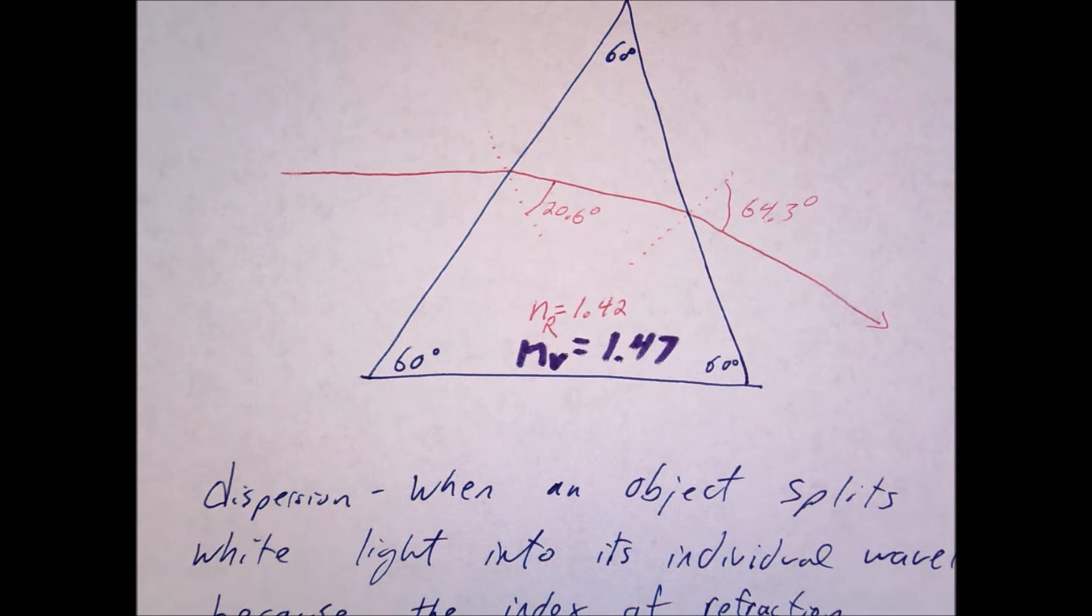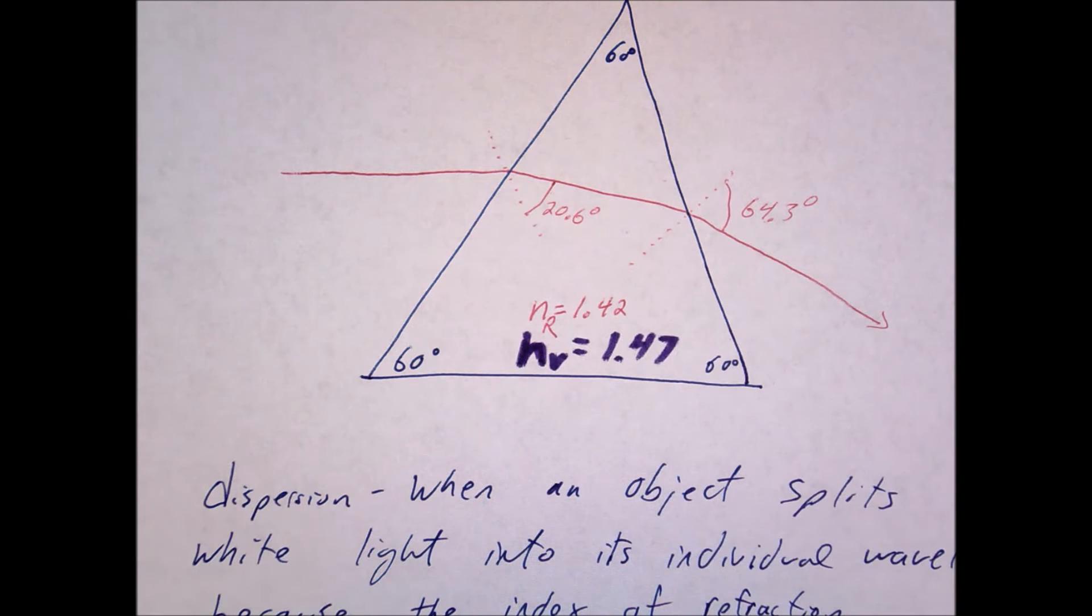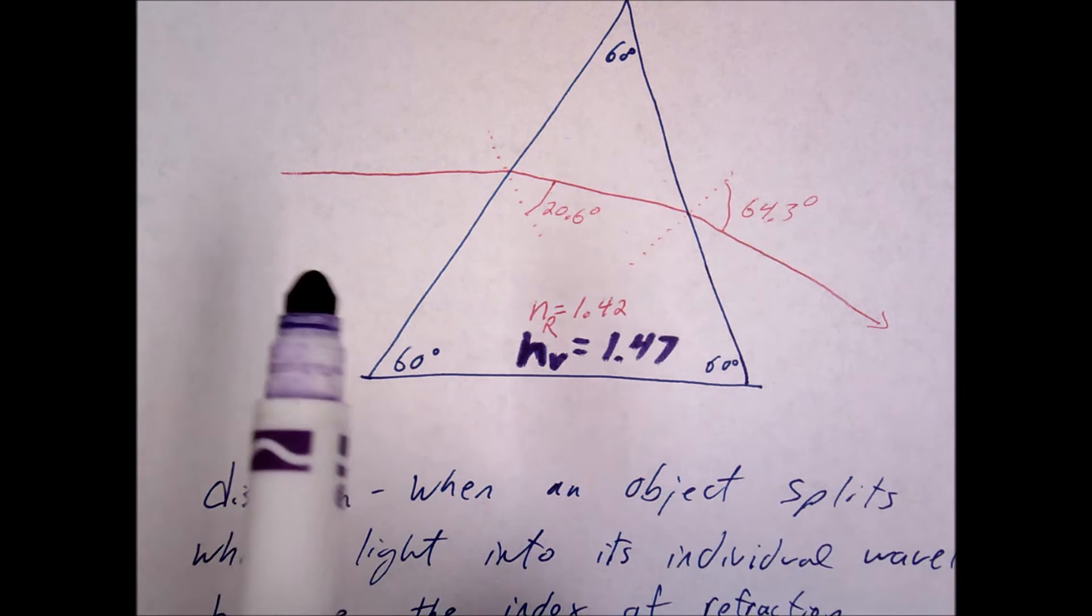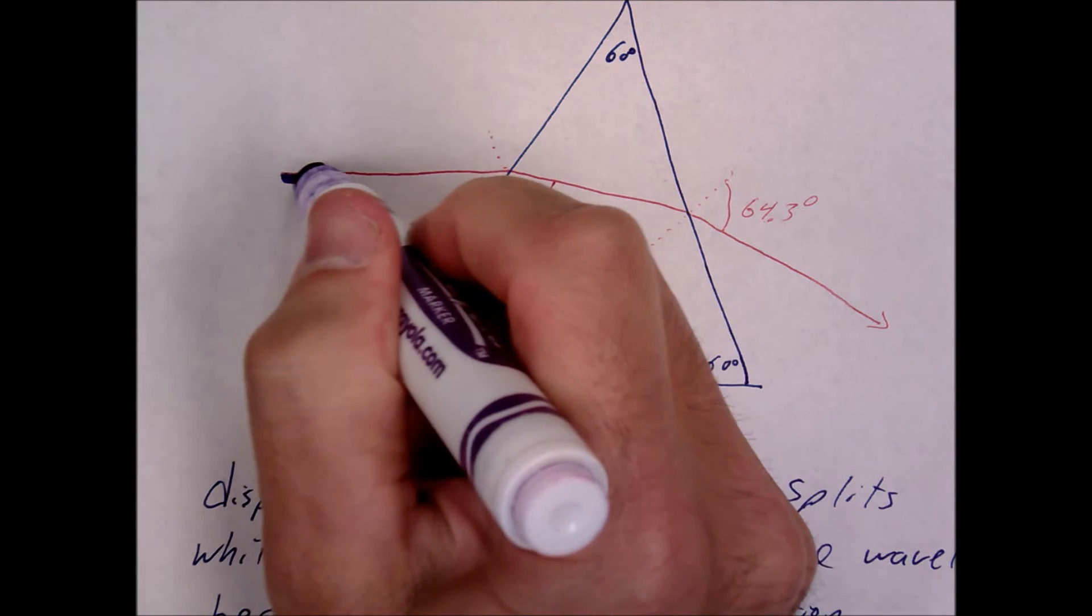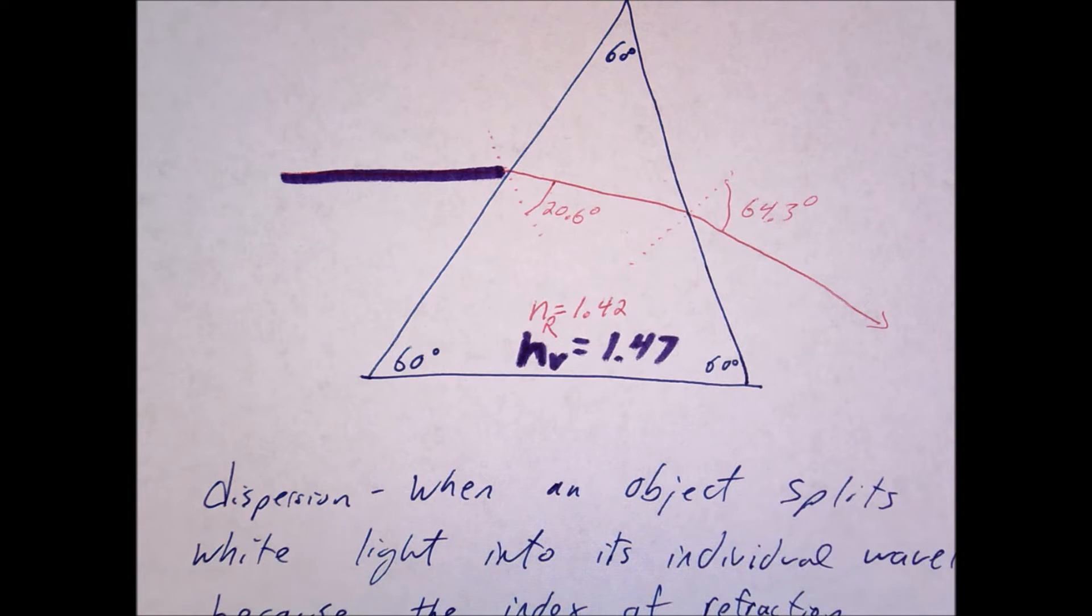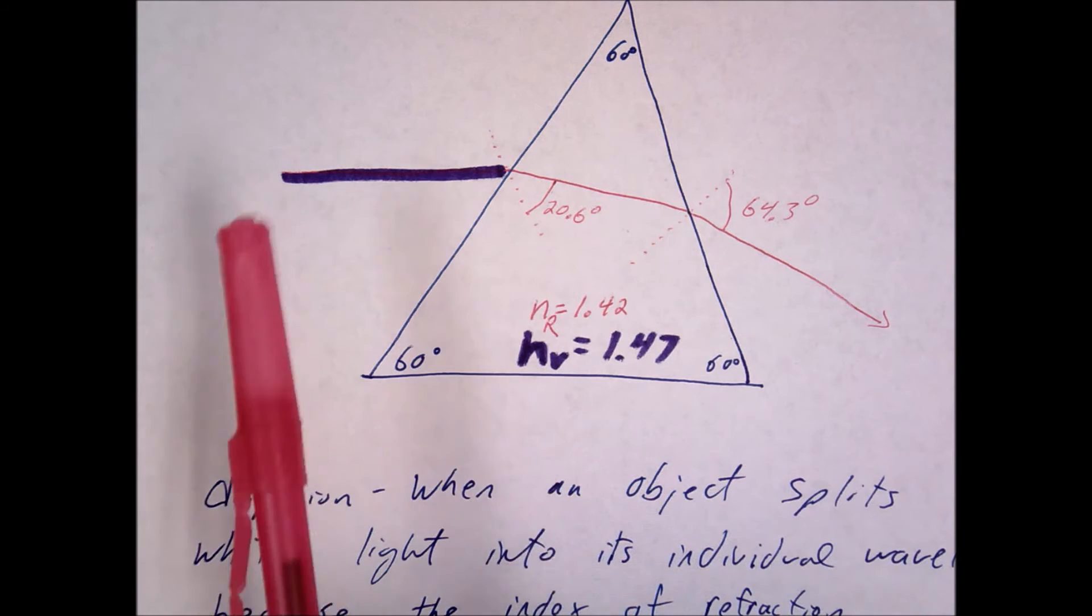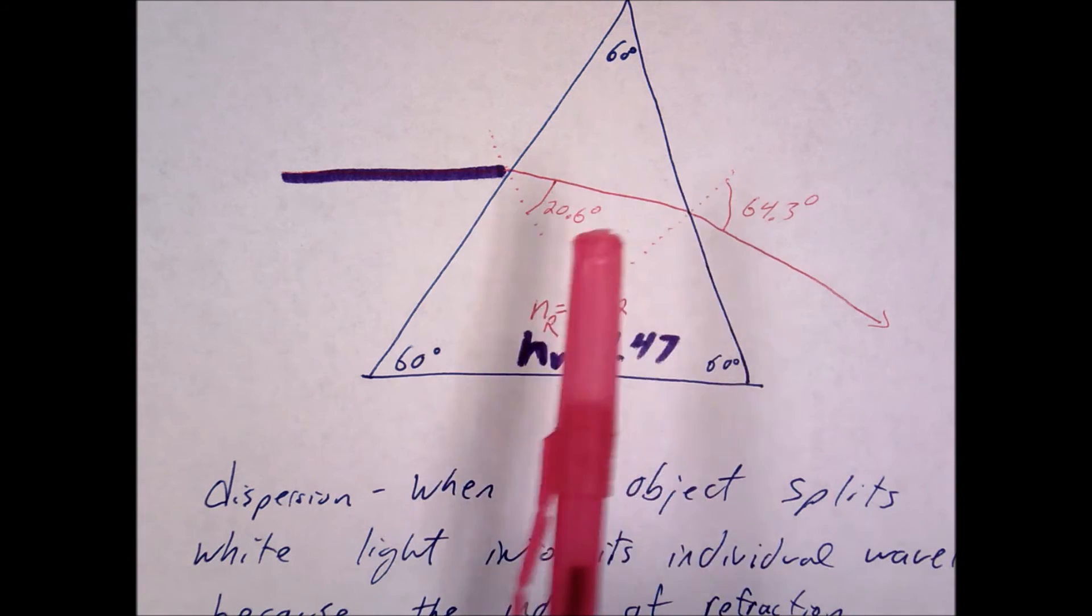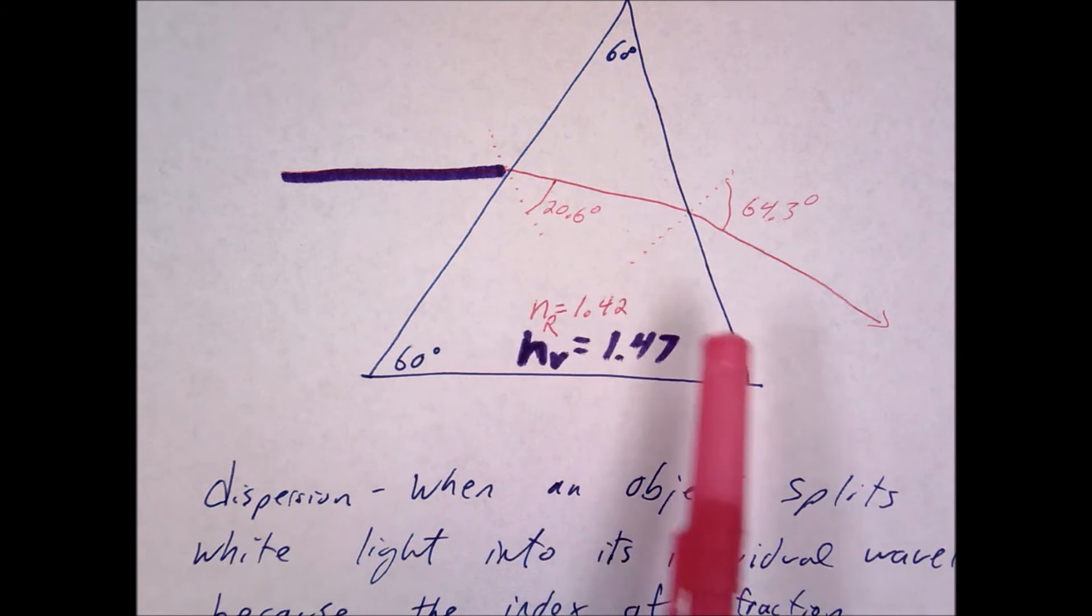Okay, n equals, yeah. N for violet equals 1.47. So imagine I'm going to take a red laser and a purple laser, violet laser, and I'm going to send them together so that I have my red laser right on top of my purple laser. I'm going to send them both in at the same time. And what I want you to do is find the angles, find the exit angle for the violet.